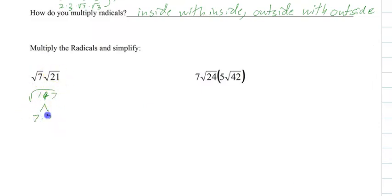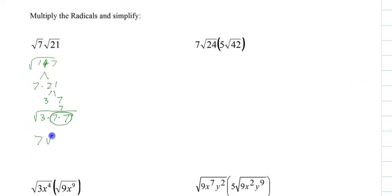Put it all together we have 3 times 7 times 7, so there's our pair. So we get 7 square root of 3 and that's all you're doing. So with multiplying, all you're going to do is take these, multiply them together to create one radical, and then simplify it.